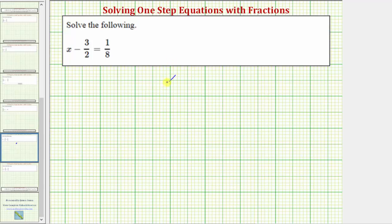We want to find the solution to the equation x minus 3 halves equals 1 eighth. The solution is the value of x that makes the difference on the left equal to 1 eighth.